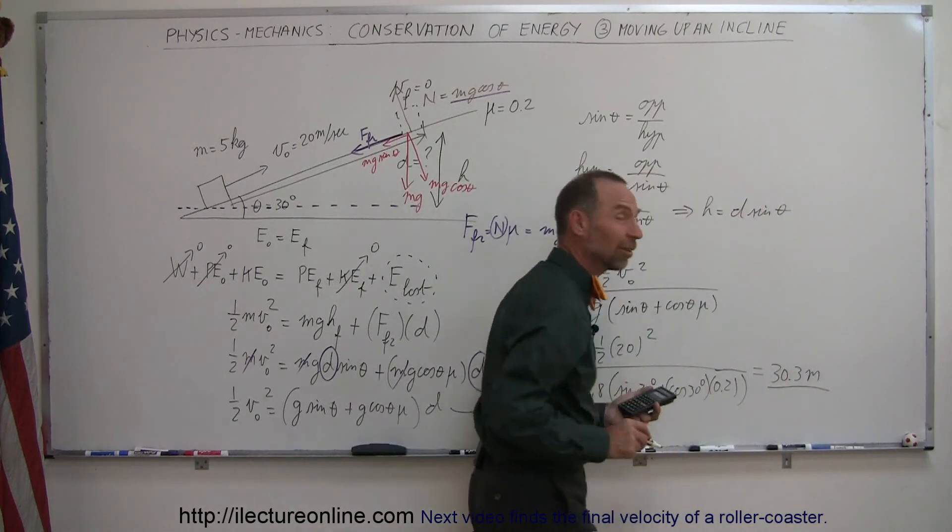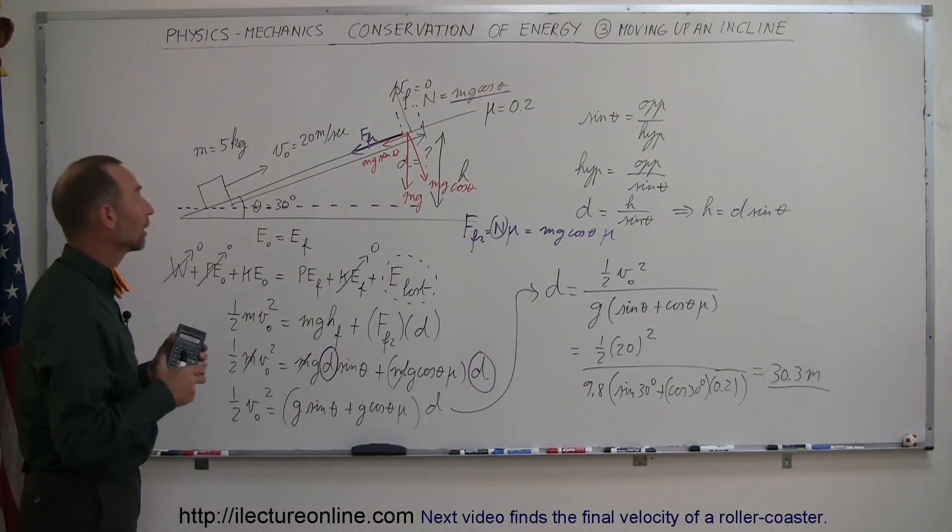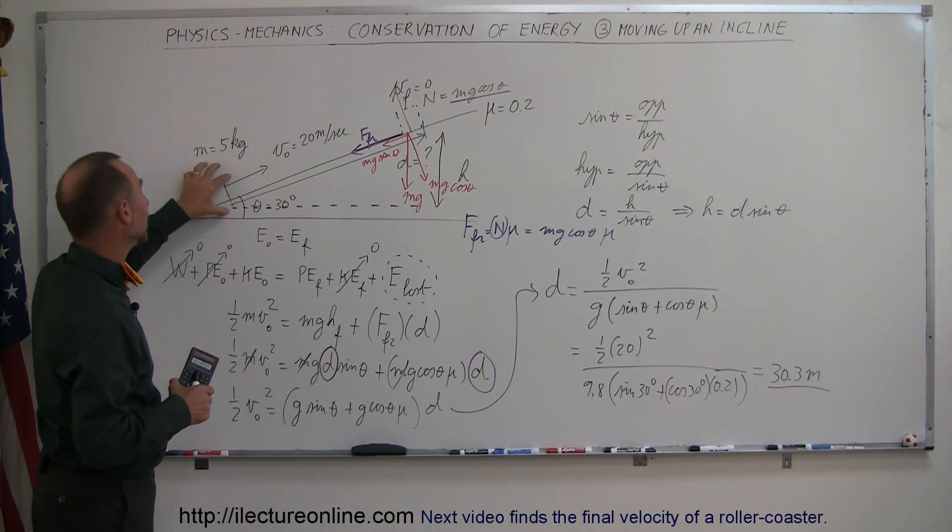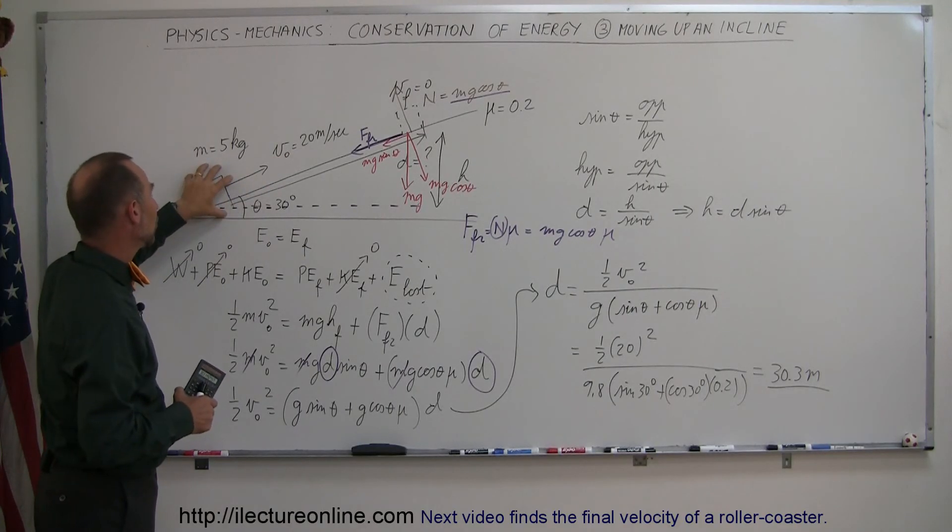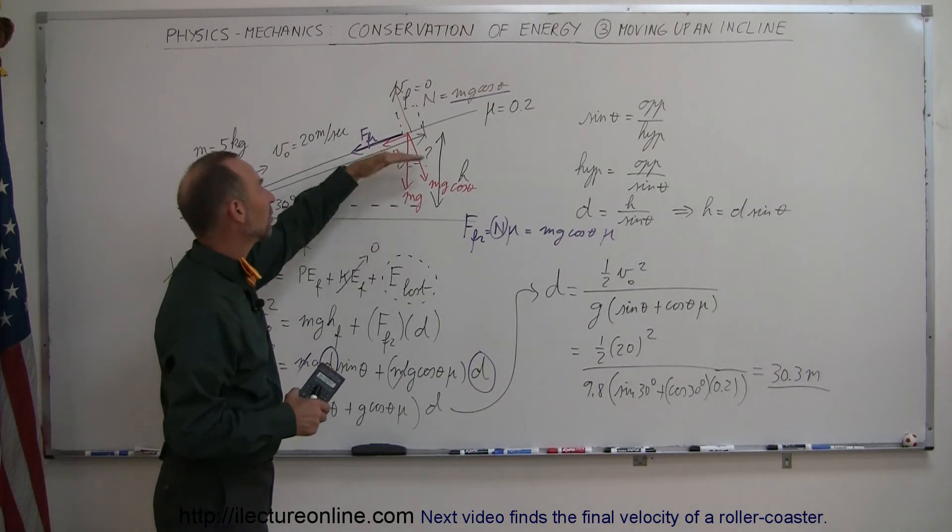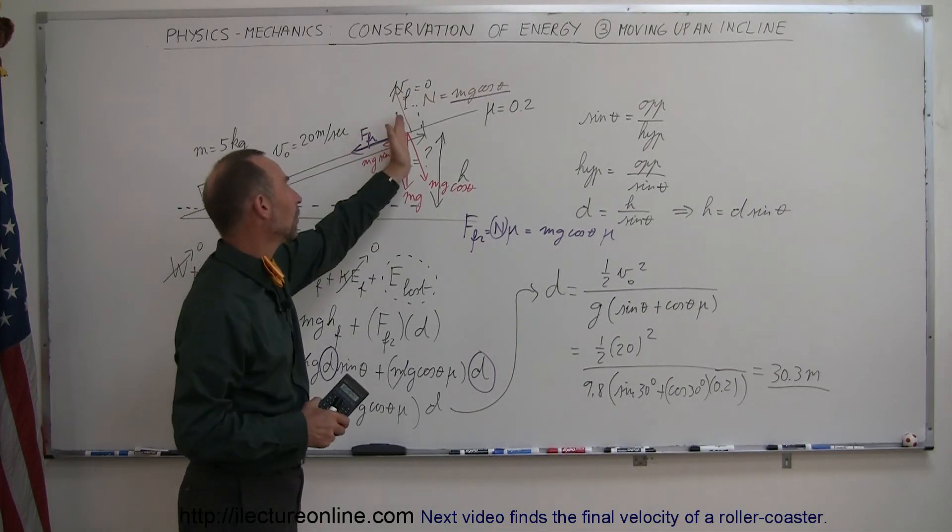That's the distance that the object will travel up the incline. And so keeping in mind is that all it had initially was some kinetic energy due to its velocity. That kinetic energy was used to increase its height.